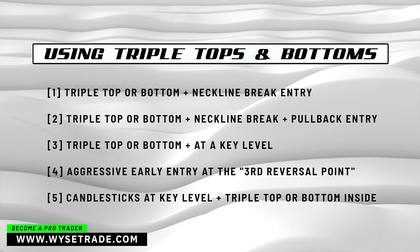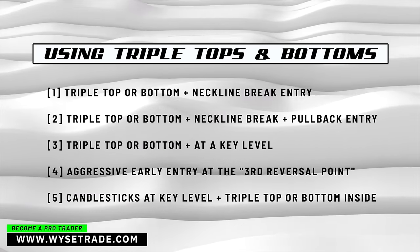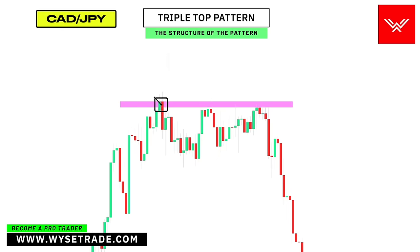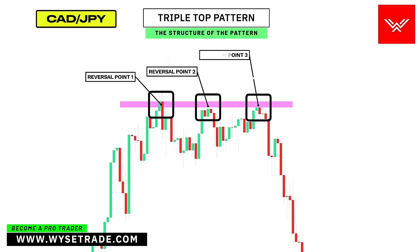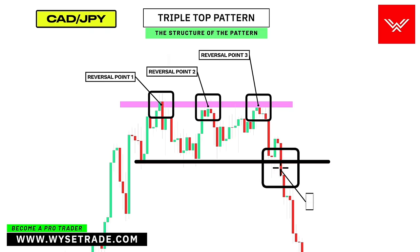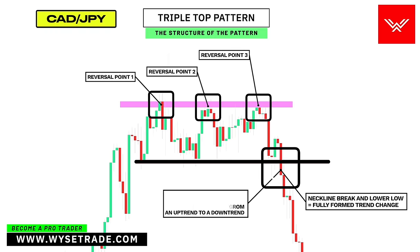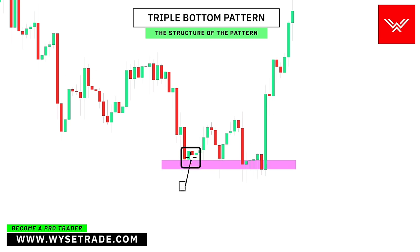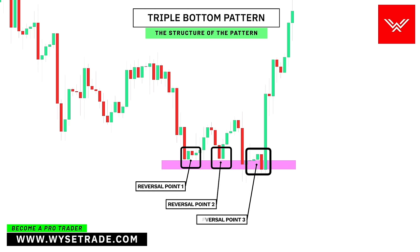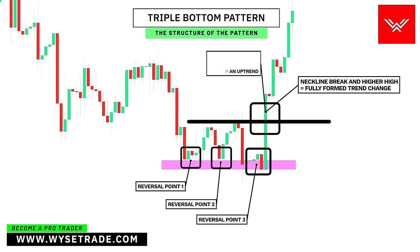Let's move on to the triple top and triple bottom pattern. This is the CAD yen currency pair. Reversal point 1, reversal point 2, and reversal point 3, which creates the triple top pattern. Neckline here, and once it breaks the reversal is confirmed and is when you would look for short entries. Reversal point 1, reversal point 2, reversal point 3, which creates the triple bottom pattern. Neckline here, and once it breaks the reversal is confirmed and is when you would look for long entries.